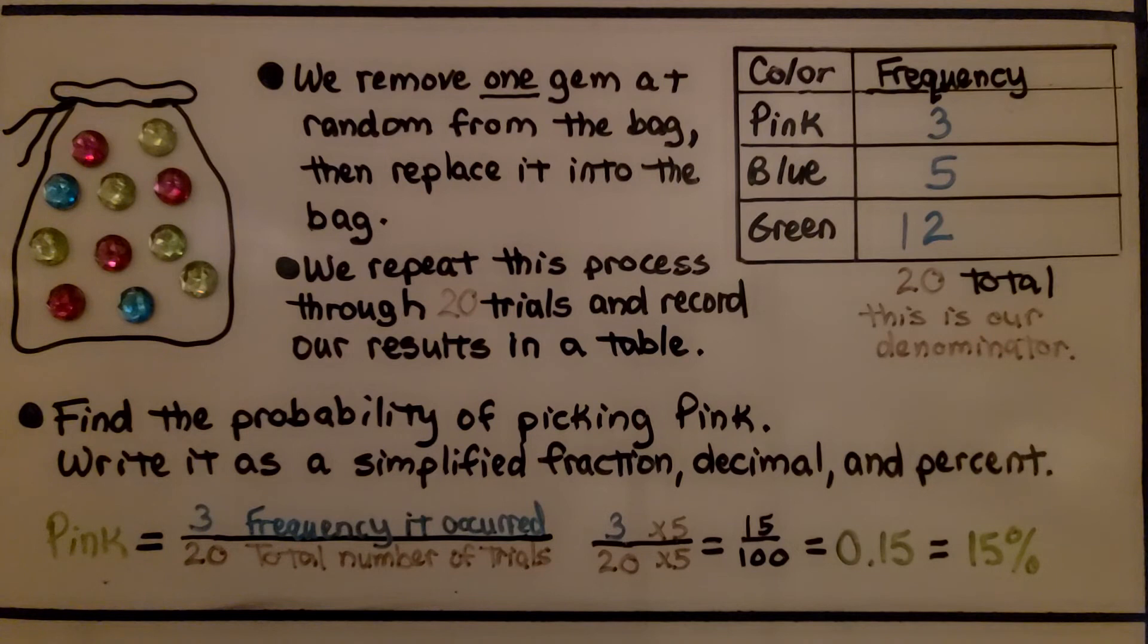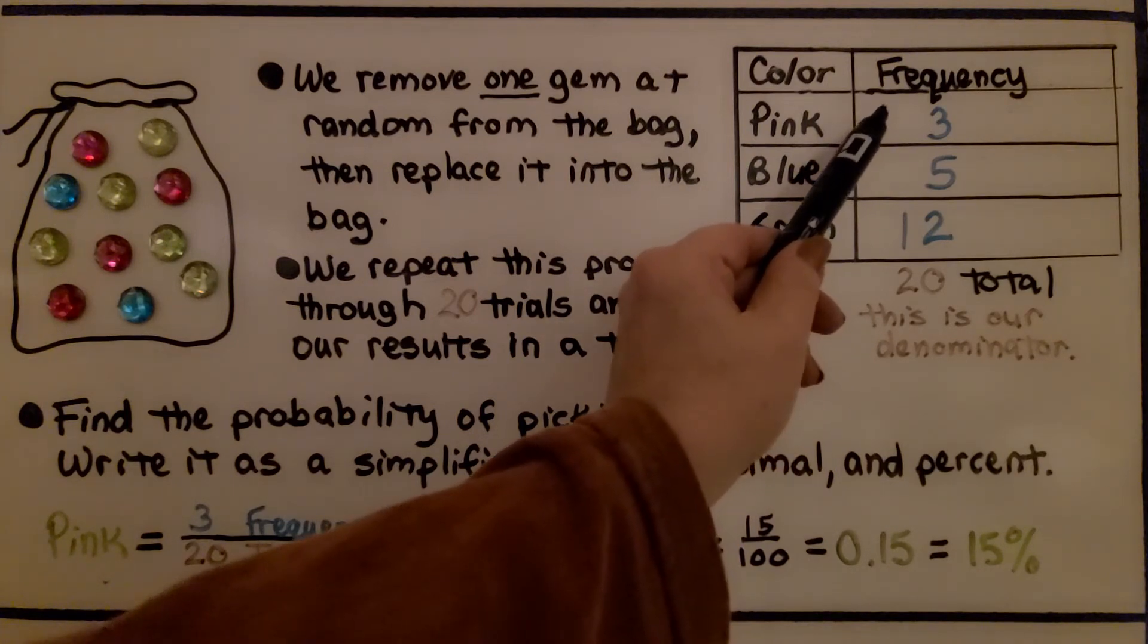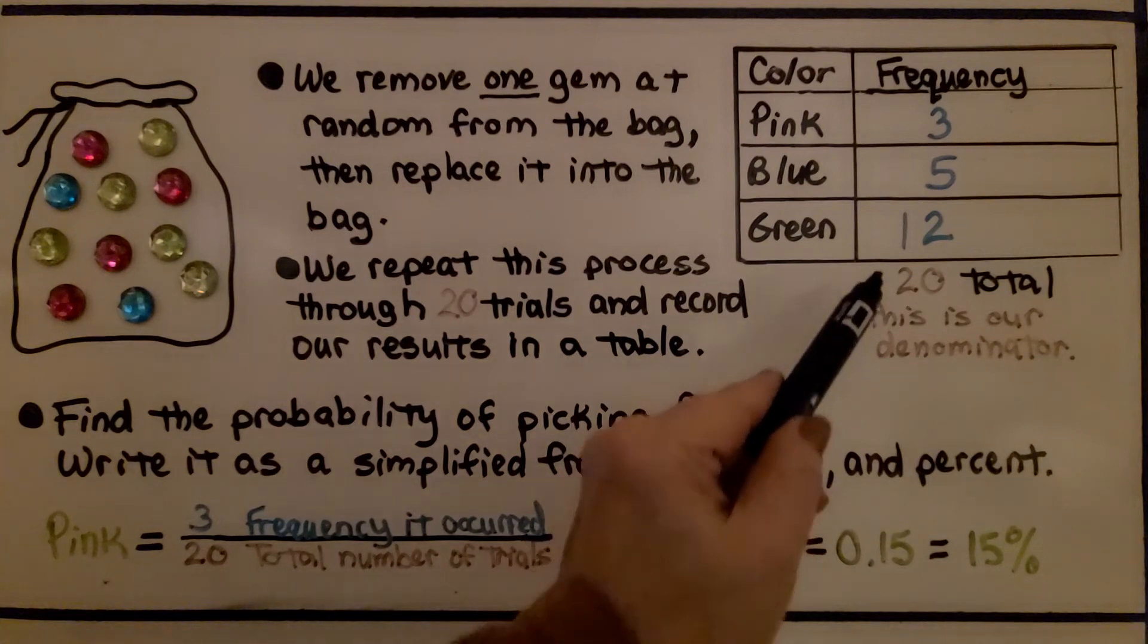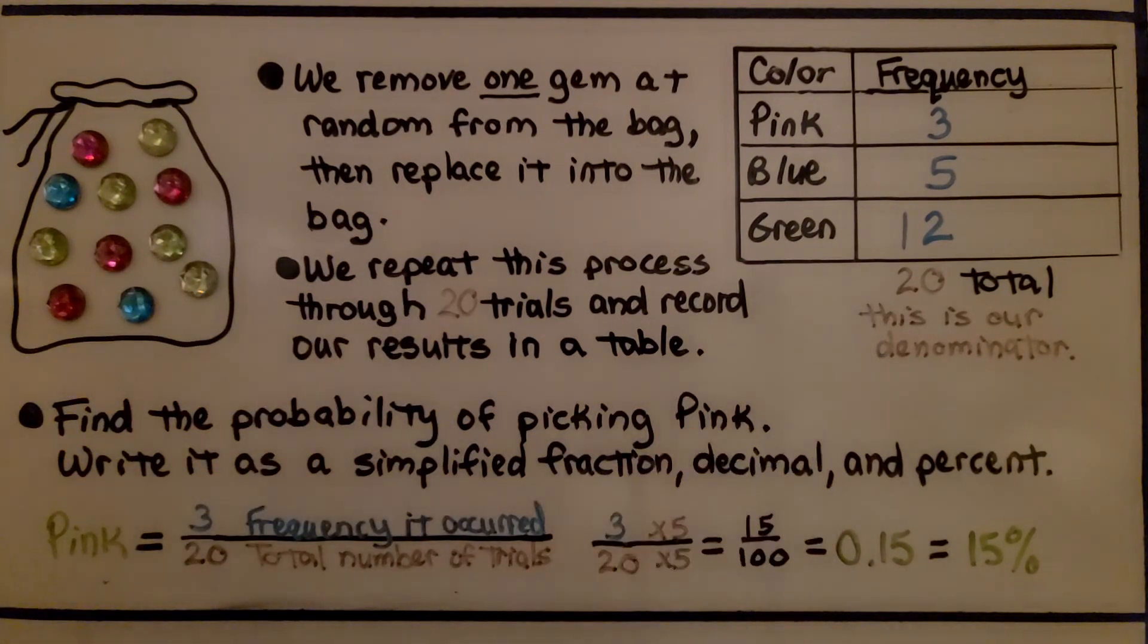That means we do it twenty times, and record our results in a table. And what we find is, in this case, pink was picked three times, blue five, and green twelve, which is a total of twenty. We had twenty trials, and that's going to be our denominator.